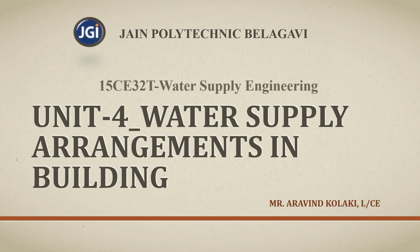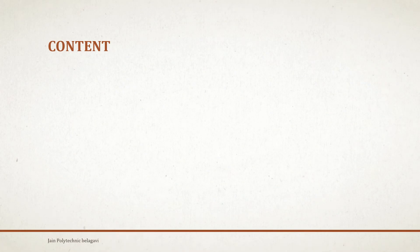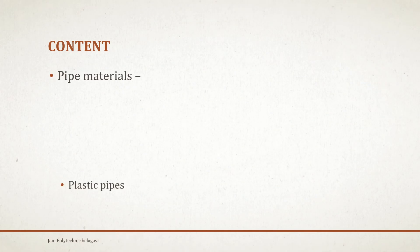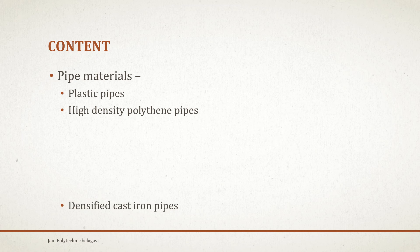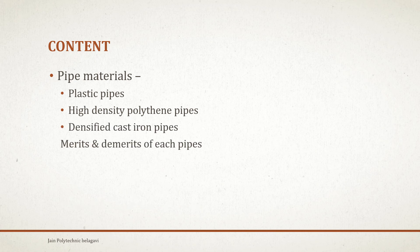Welcome back. Today we are going to discuss the water supply arrangements in-building. The following contents are: pipe materials, plastic pipes, high-density polyethylene pipes, and cast iron pipes, along with the merits and demerits of each pipe type.